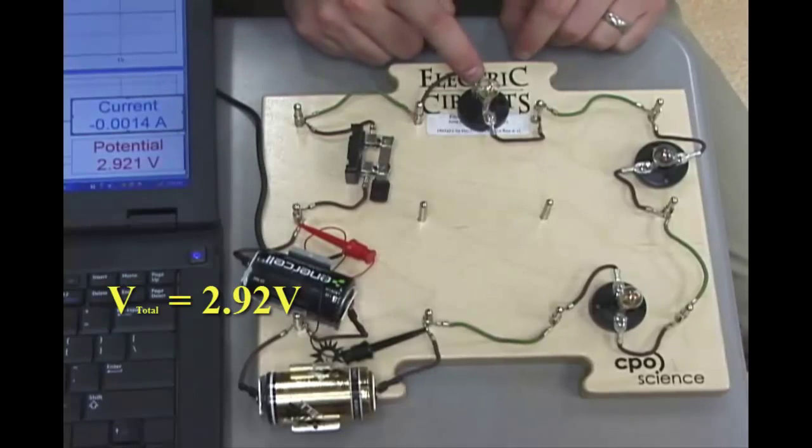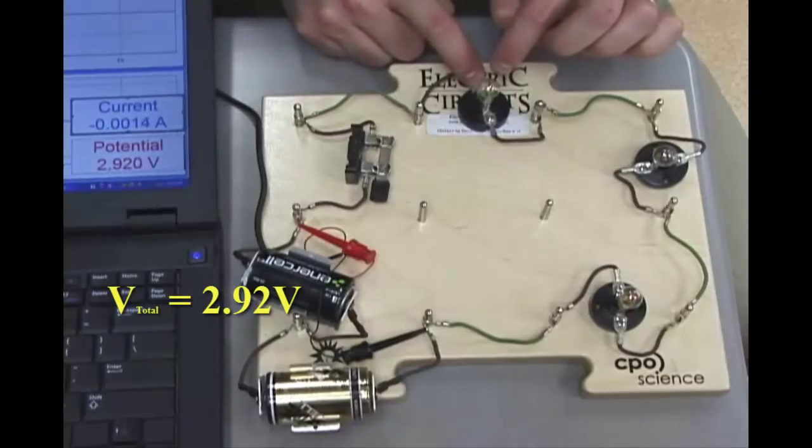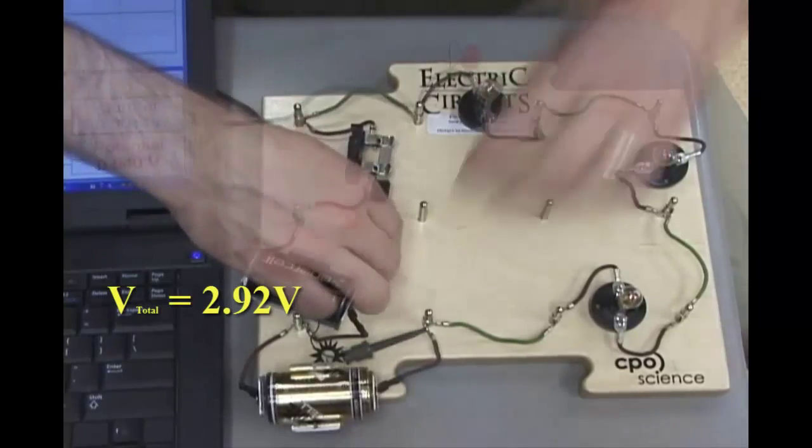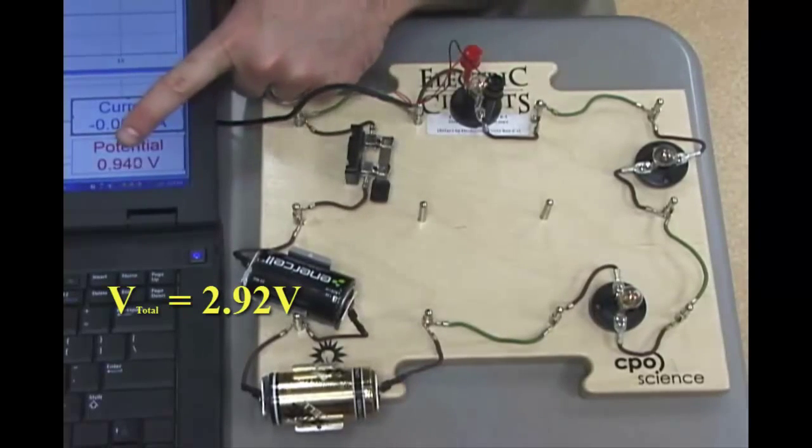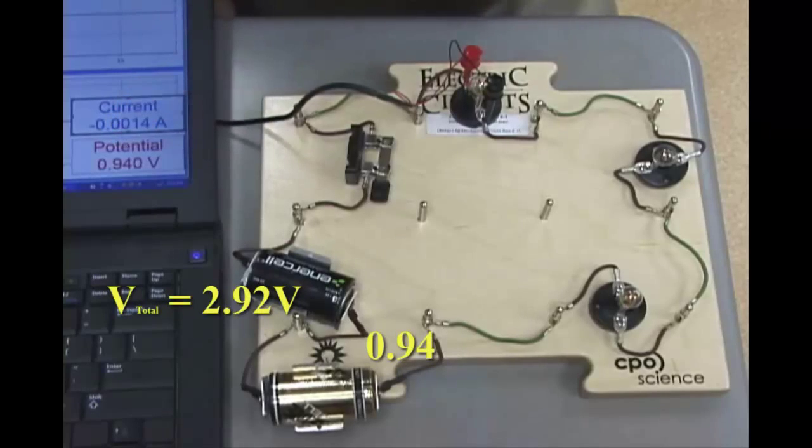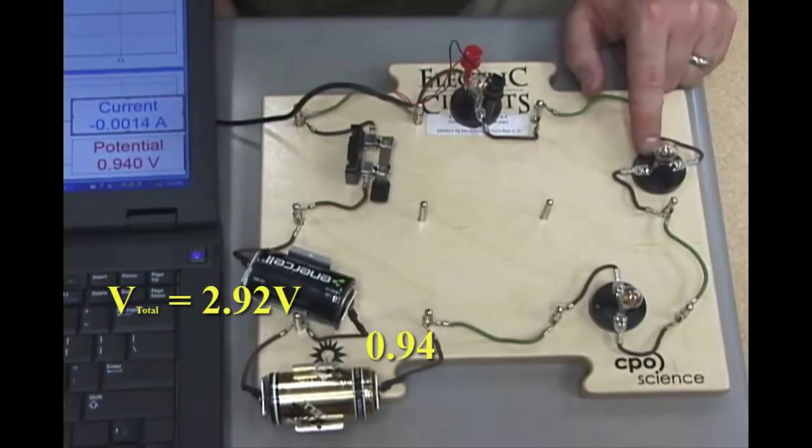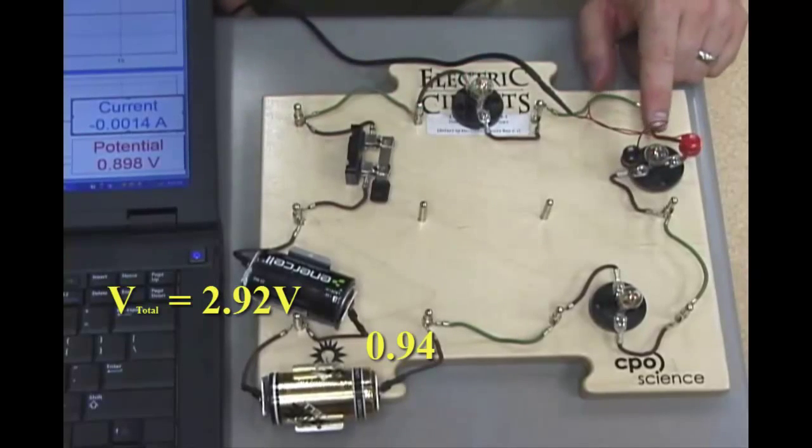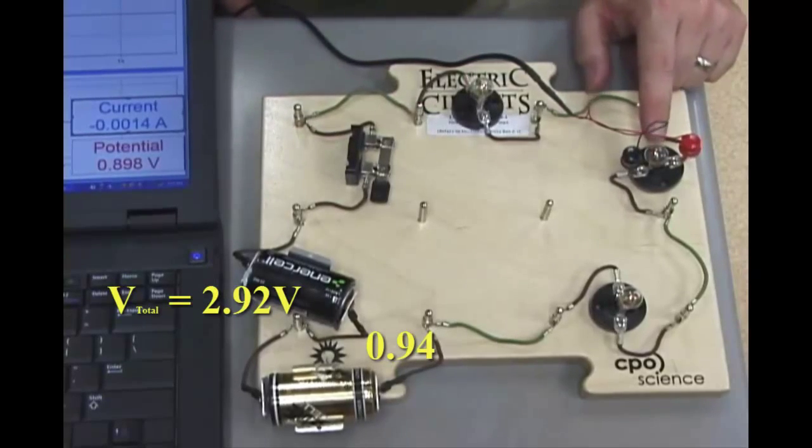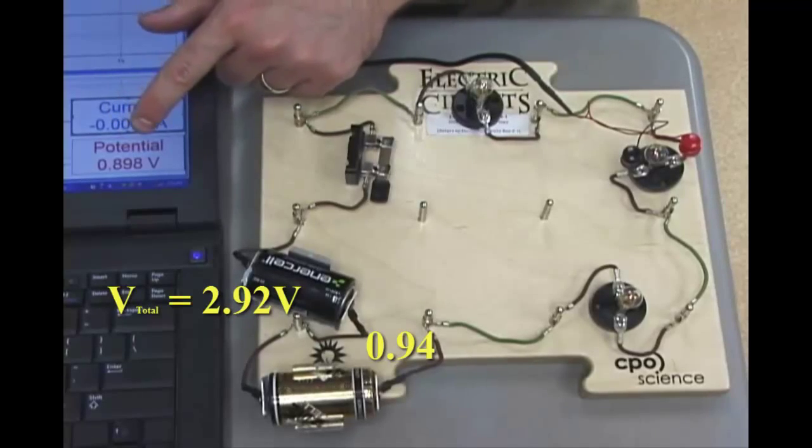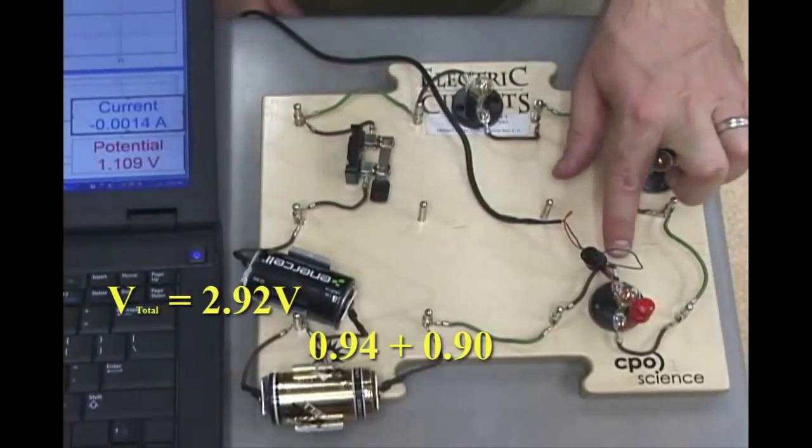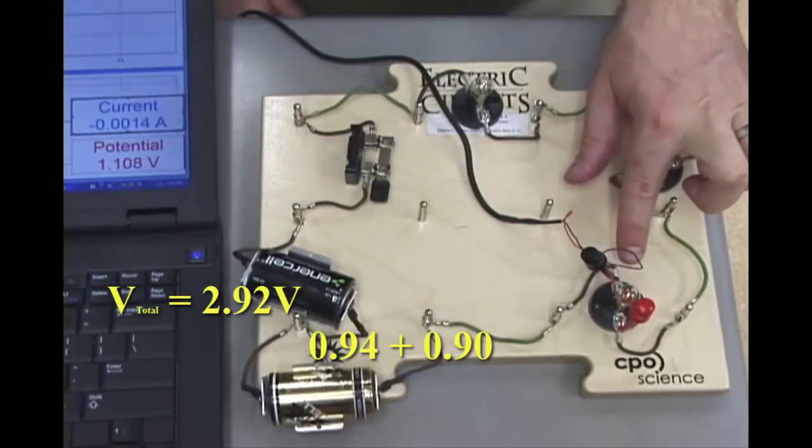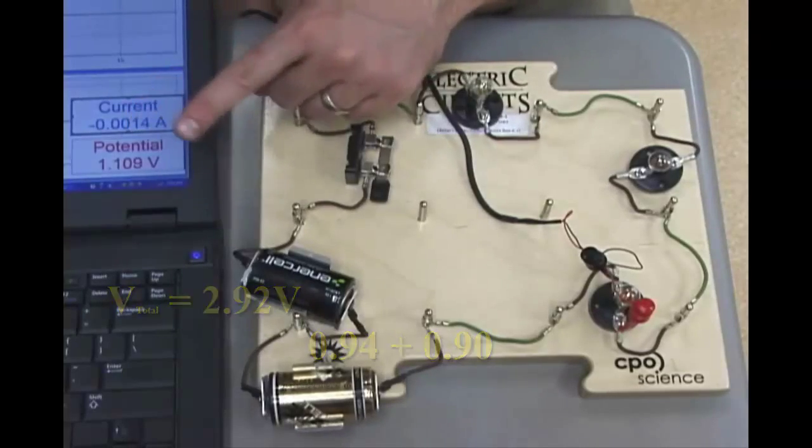If I were to clip my voltmeter here and here, I'd be able to measure the voltage across light bulb number 1. I wonder what that voltage is. I've clipped my probes up to light bulb number 1 and the voltage is 0.94. What do you think the voltage for light bulb number 2 is going to be? I've clipped my voltmeters up to light bulb number 2 and the voltage is 0.89 or 0.9. Light bulb number 3, I've clipped my voltmeter up to light bulb number 3 and the voltage is 1.11.